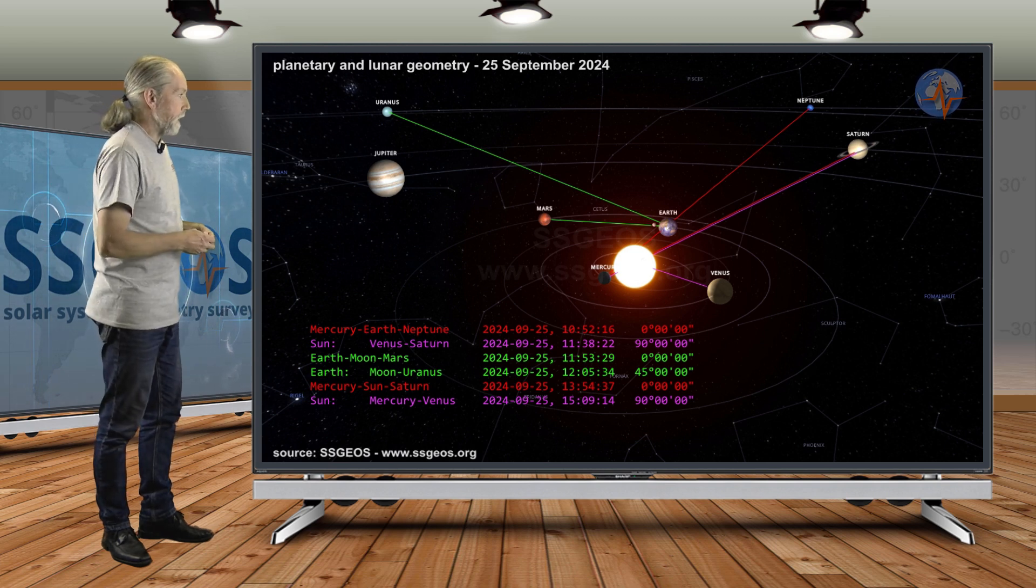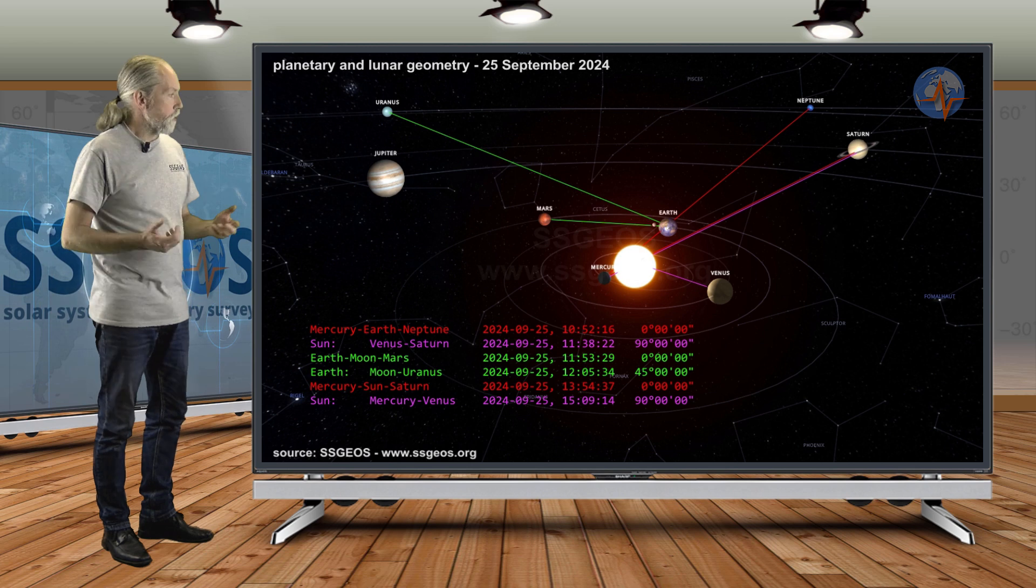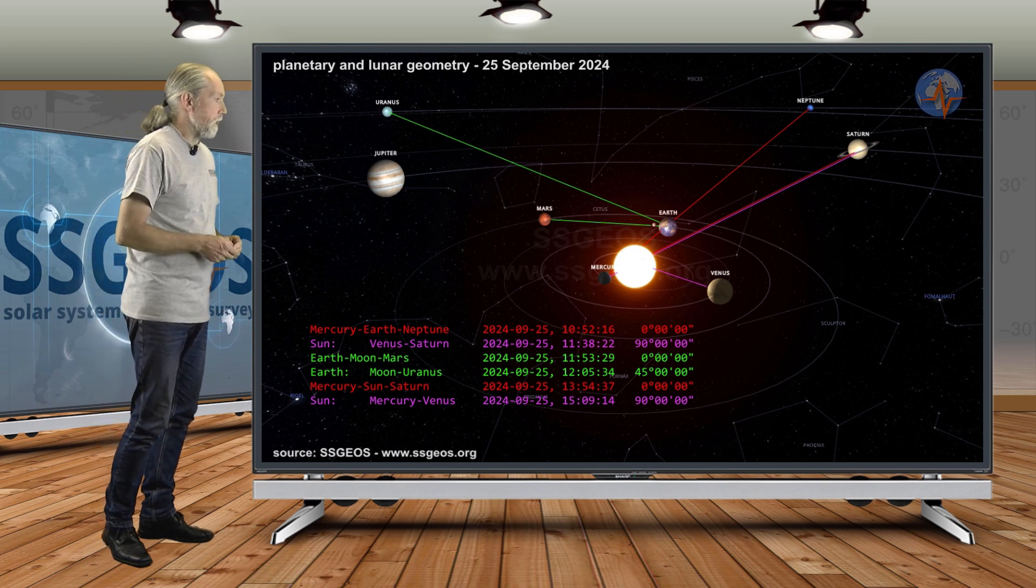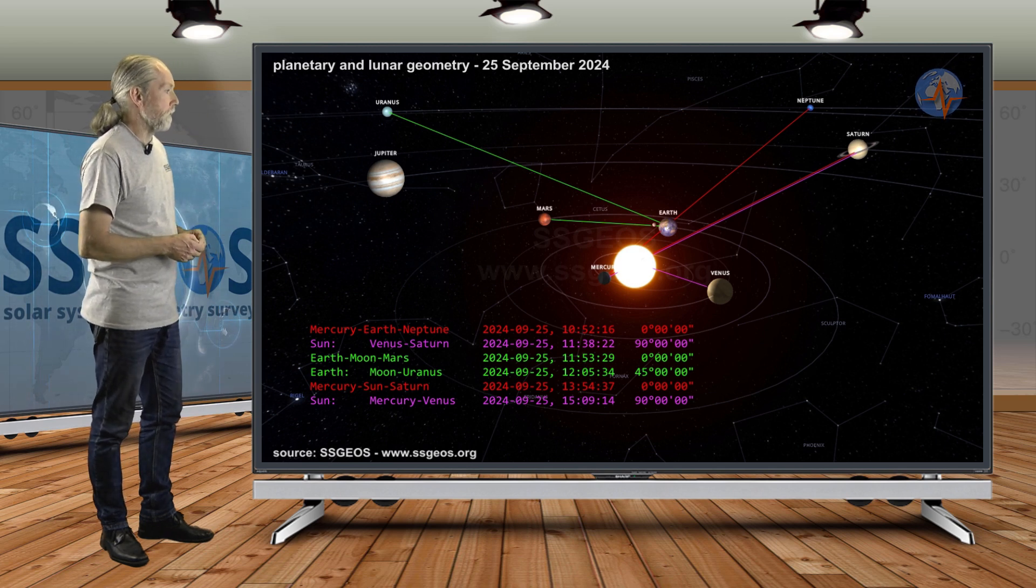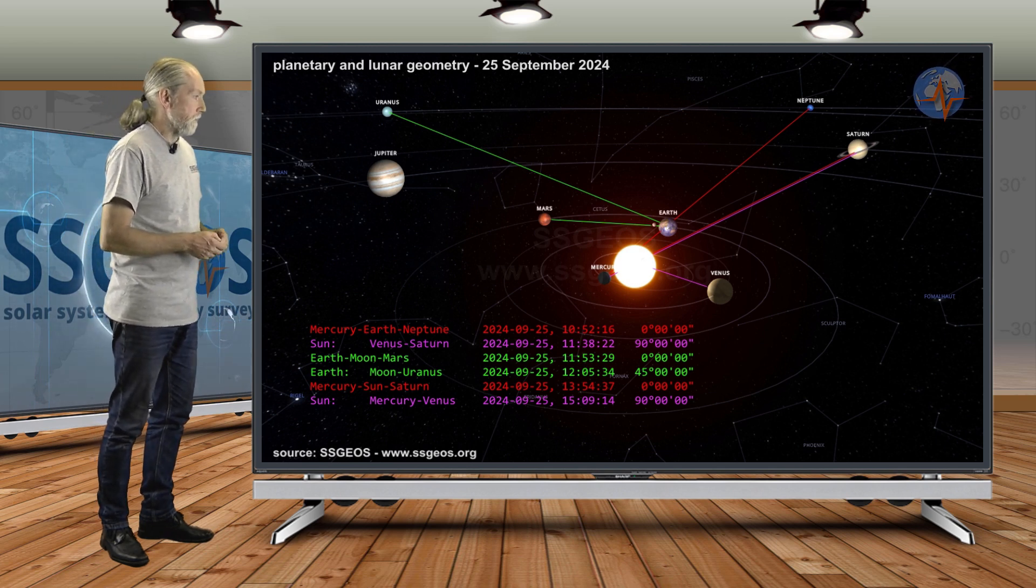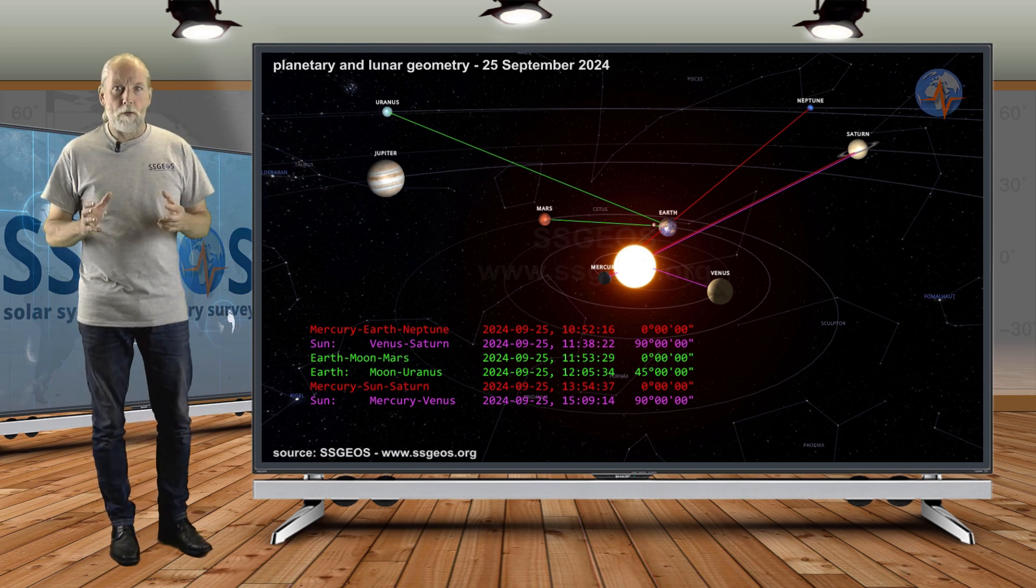Then we have the second planetary conjunction, that is Mercury-Sun-Saturn at 1354 UTC, and then finally Sun-Mercury-Venus in the right angle, and that's at 1509. So as you can see there is only about four hours in that time.